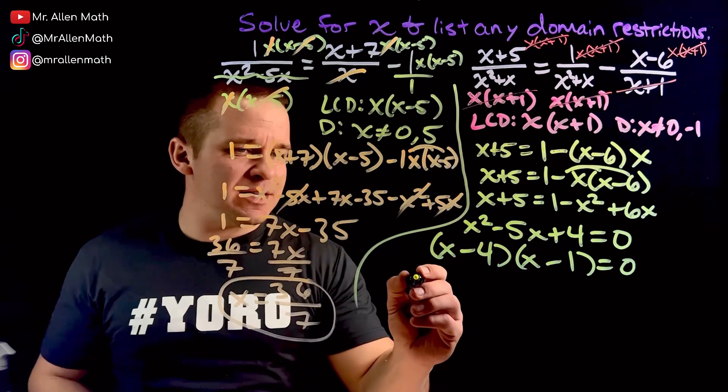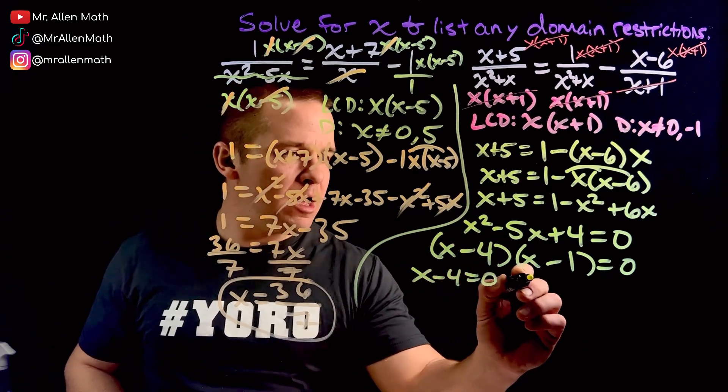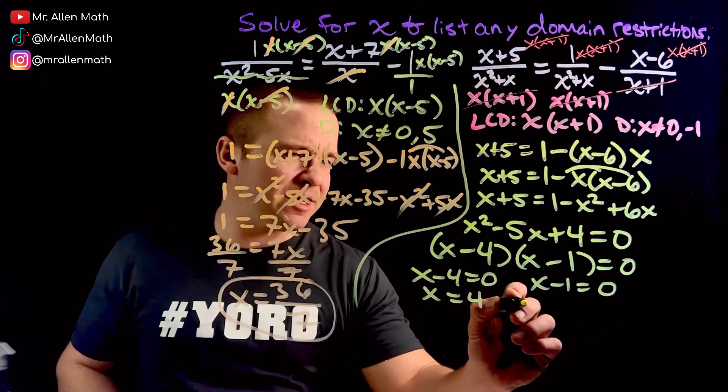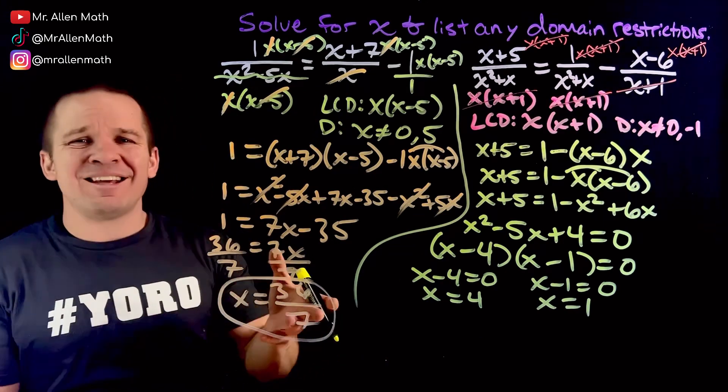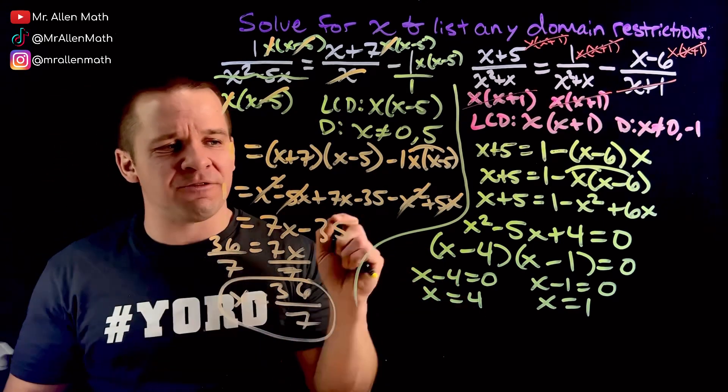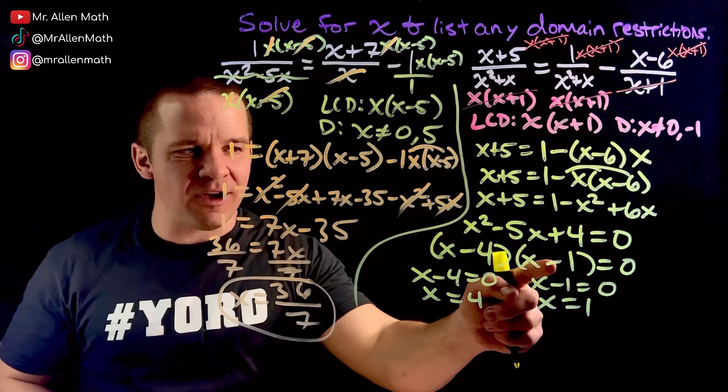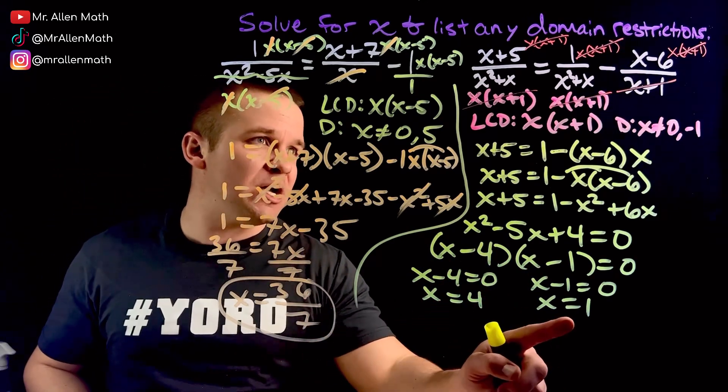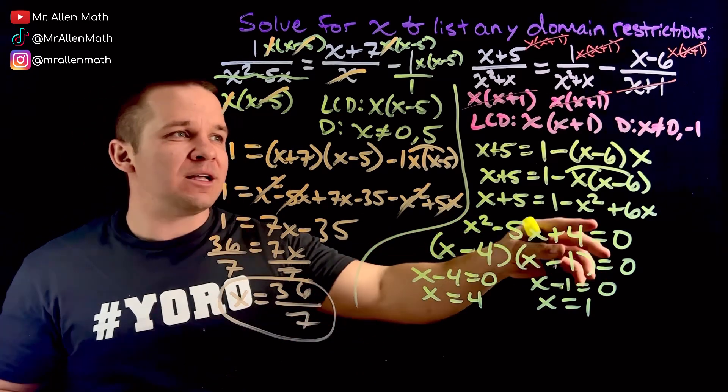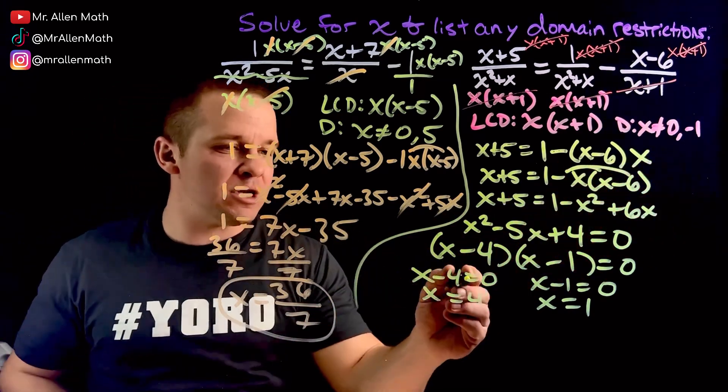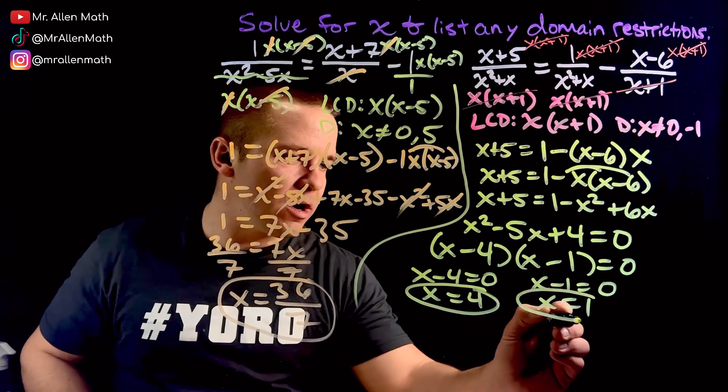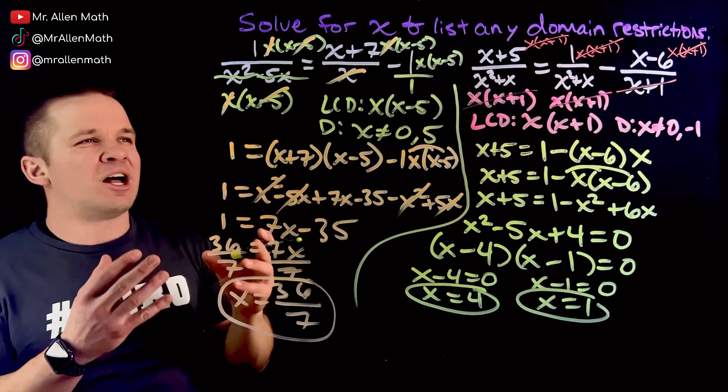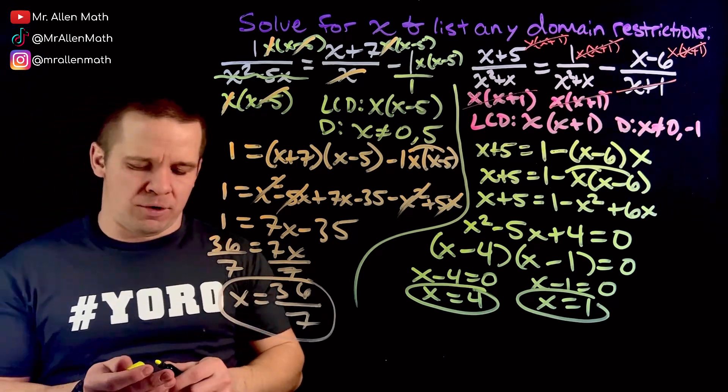So now I can just set these guys equal to 0. We got x minus 4 equals 0 and x minus 1 equals 0. I'm using my 0 product property. 0 product property there. Anything times 0 is 0. So if I can get this factor to be 0, whole thing's 0. If I can get this factor to be 0, whole thing's 0. So I've got x equals 4 and x equals 1. Am I good with that? Yeah. It's not part of my domain restriction. So both of these guys work here. It is not one that would cause my original problem to be divided by 0 to be undefined. So x equals 4 and 1 both work.